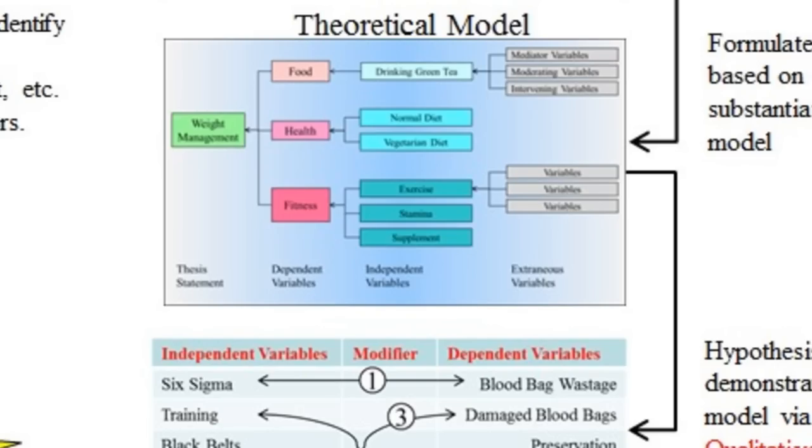Predictive theories predict relationships among the dimensions of individuals, groups, situation, or events. Predictive theories are tested through experimental or quasi-experimental research designs.